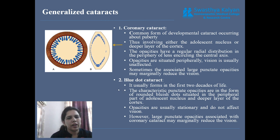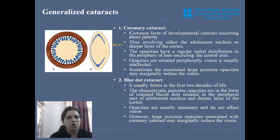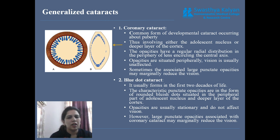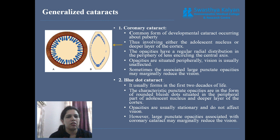Blue dot cataract also appears in the adolescent nucleus, about the periphery of the adolescent nucleus. It is small, fine, punctate dotted-like opacity in the form of blue dots. Sometimes parts of the cortex are also involved. These blue dot opacities are usually stationary and very small, so they also do not cause much vision loss.